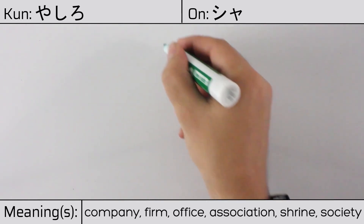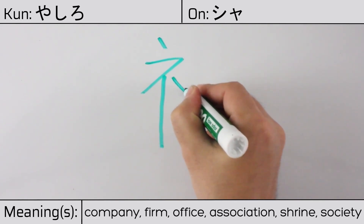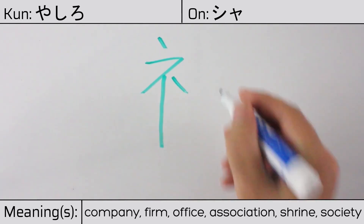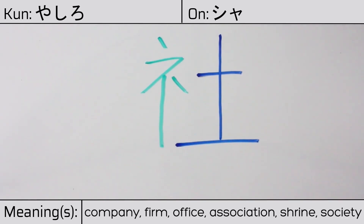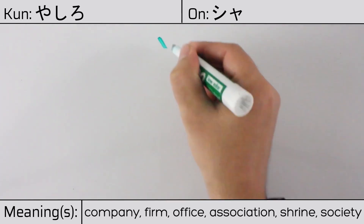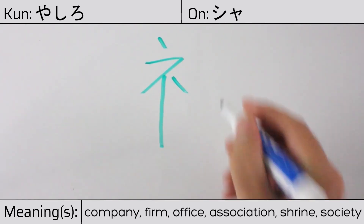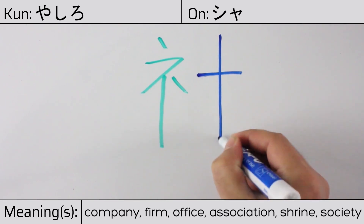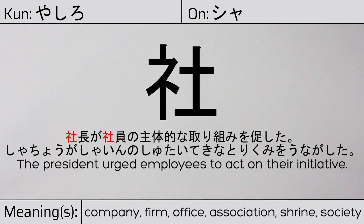This character is made up of the following radicals or parts: shimesu hen meaning altar, festival, or ceremony on the left, followed by tzuchi or earth on the right. You can remember this kanji by the following hint: place where people live and work around the ancestral altar. Our example sentence is: 社長が社員の主体的な取り組みを促した — The president urged employees to act on their initiative.